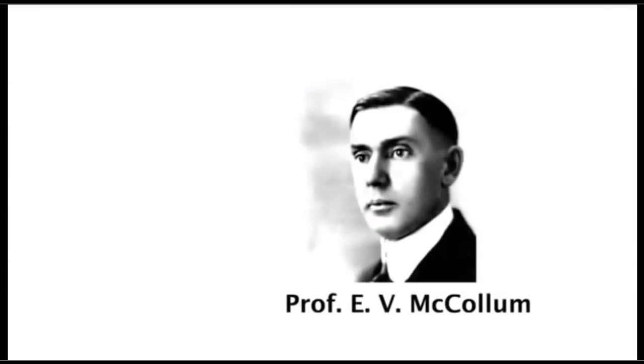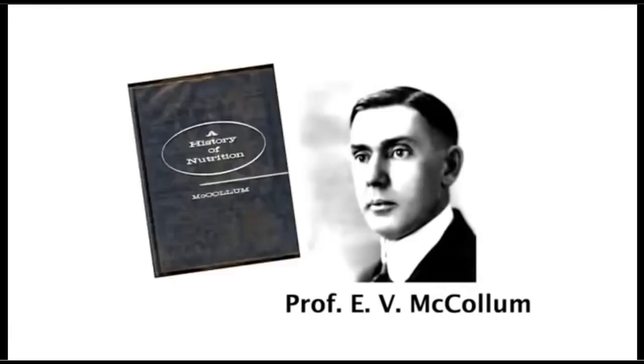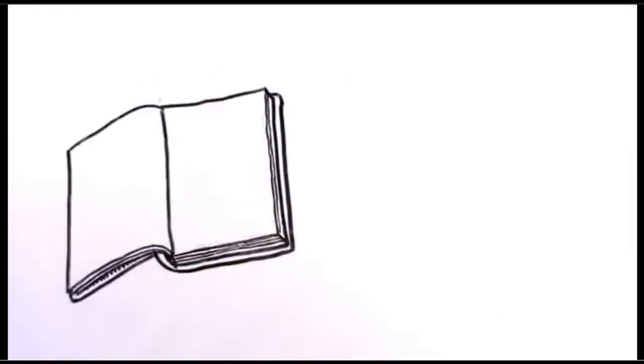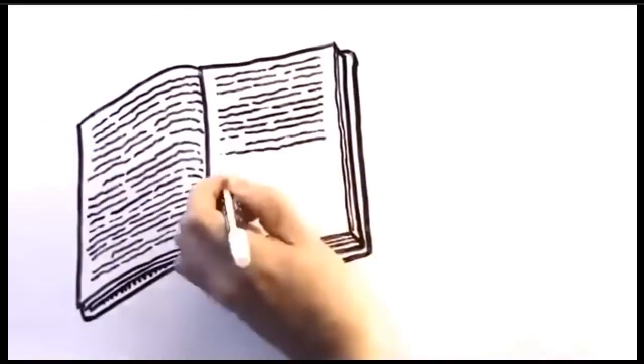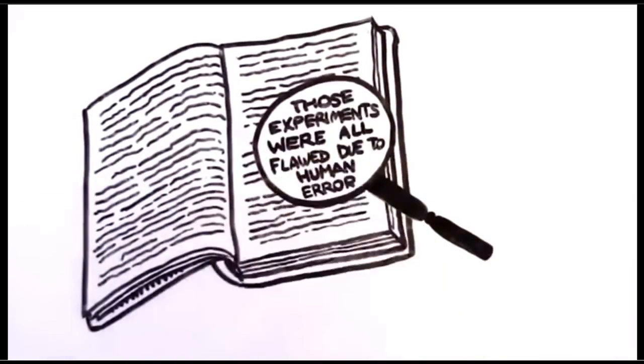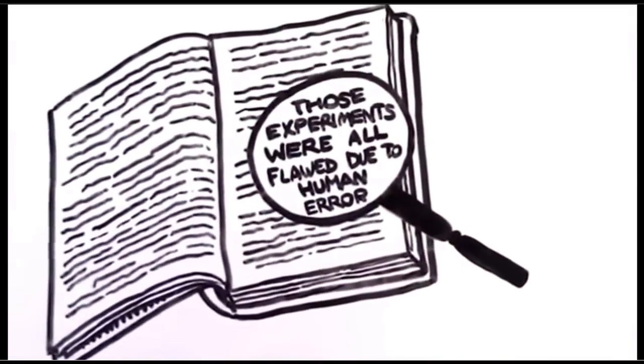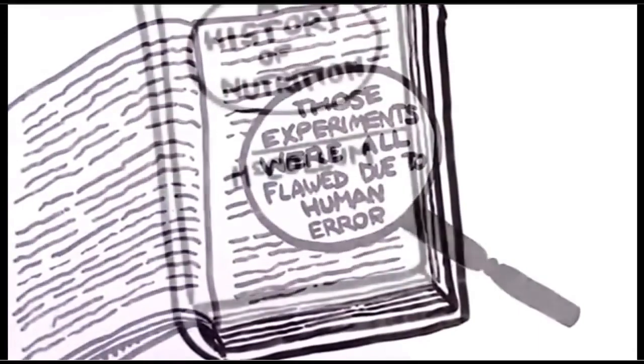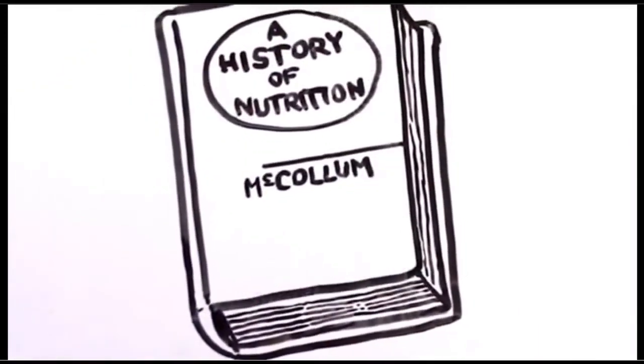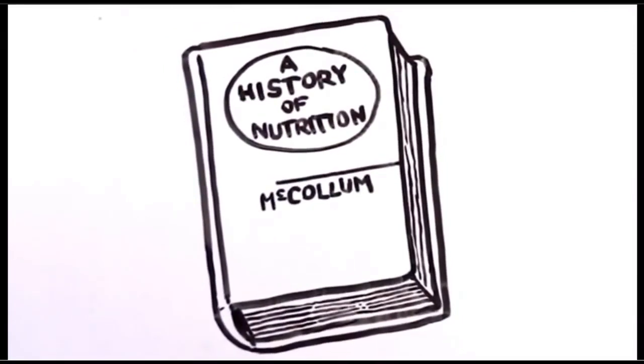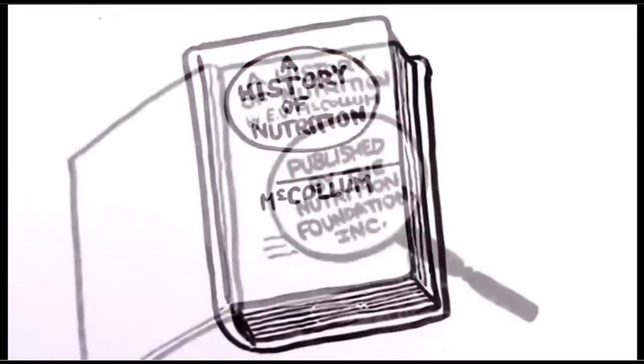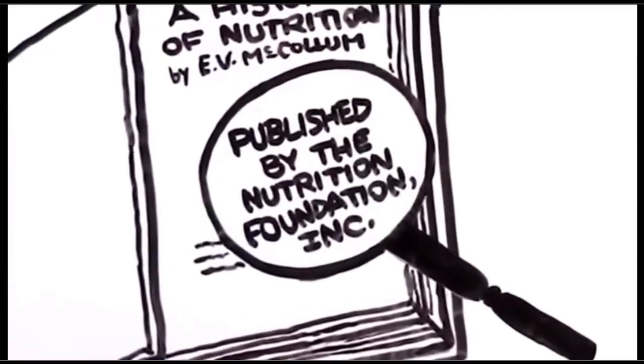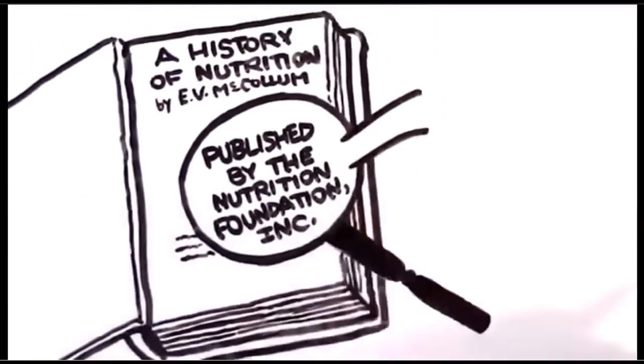Later, in 1957, noted professor E. V. McCollum, who was often referred to as America's top nutritionist of the day, published a book called A History of Nutrition. In it, he argued that despite there being dozens of experiments done since the 1800s, proving sugar was bad for human consumption, those experiments were all flawed due to human error. This book was published and marketed with the same ferocity you see with bestsellers today. But where did it come from? No scientist has his own money to publish a book on such a grand scale. And let's face it, A History of Nutrition? It's not a title that will make a book fly off the shelves. A look inside the book revealed it was published and marketed by a company called The Nutrition Foundation, Inc.